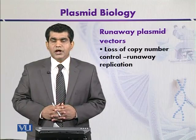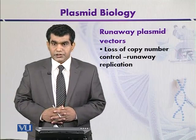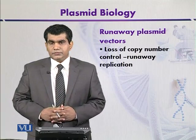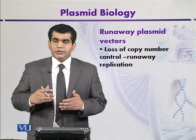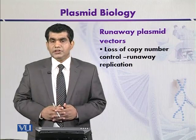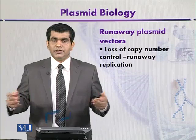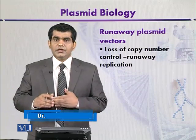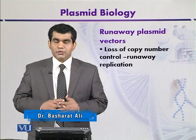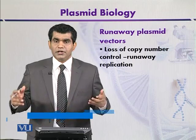They also have their utilization in gene cloning procedures. For example, high copy number plasmids are mainly preferred in gene cloning, because they will produce more copies of the clones of the target DNA, and in turn will express more target proteins. So target proteins will also be produced in abundance.